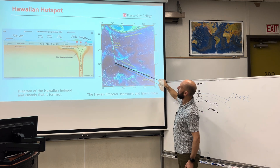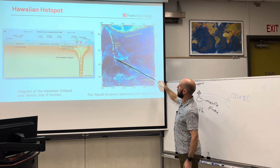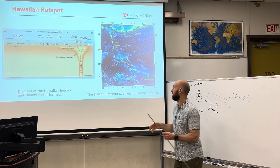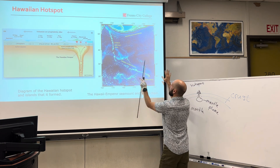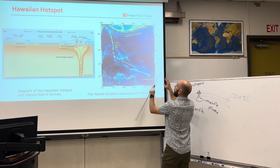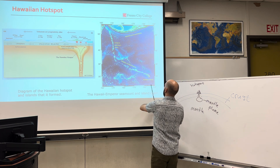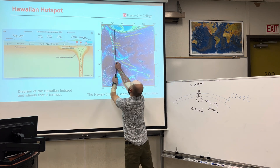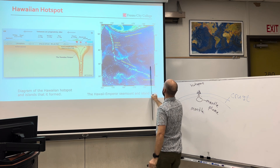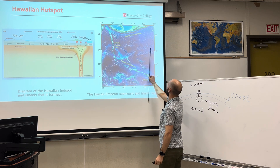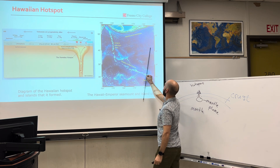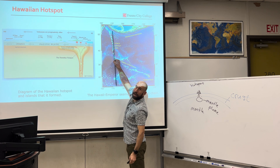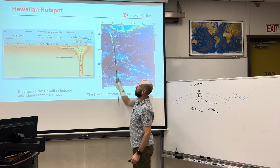There's this really interesting bend here because the direction of the plate shifted. The plate was moving in one direction, forming islands in sequence, and then it started moving a different way — and there we have the Emperor Seamount chain.